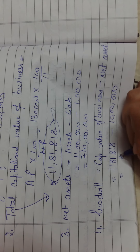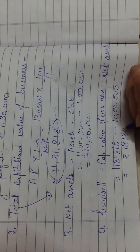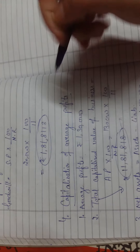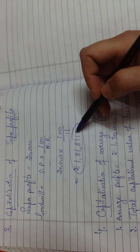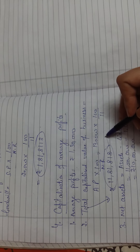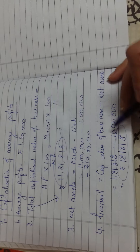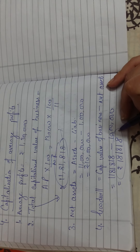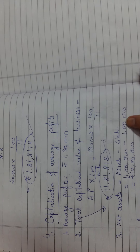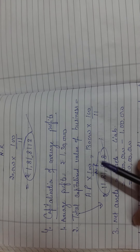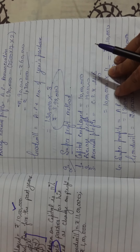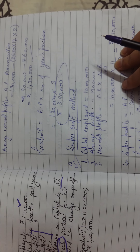The value of goodwill under capitalization of average profits is rupees one lakh eighty-one thousand eight hundred and eighteen. Notice that when calculating goodwill using the capitalization method — whether it is capitalization of super profits or capitalization of average profits — the value of goodwill will always be the same. However, the answers under the average profit method and super profit method will differ from each other and from the capitalization methods.